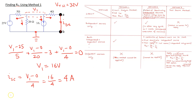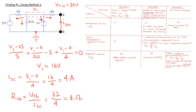Now RTH is given by VTH over I short circuit, which is 32 volts divided by 4 amps, giving 8 ohms. This illustrates how the circuit analysis method — method 1 — can be used to find the Thevenin resistance.